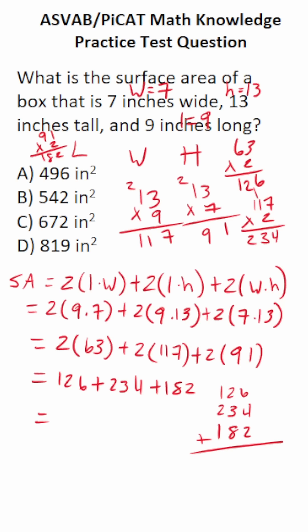6 plus 4 is 10, plus 2 is 12, carry a 1. 3 plus 3 is 6, 6 plus 8 is going to be 14, carry a 1. That's 2, 3, 4, 5. So the surface area of this rectangular prism is going to be 542 square inches. So this one is going to be B.